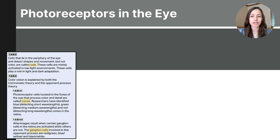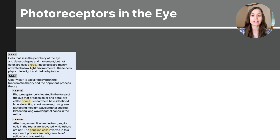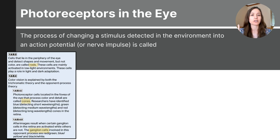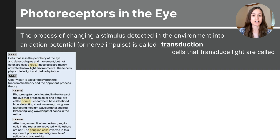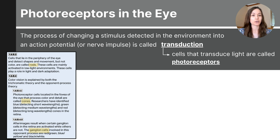As you learned in our previous video, our body has sensory receptors all throughout picking up information from the environment — in places like our skin, our nose, our ears, our tongue, and even our eyes. These sensory receptors detect stimuli like light and then transform it into an electrical message that can pass through the nervous system to the brain. This process of changing a stimulus detected in the environment into an action potential or electrical impulse is called transduction. The sensory cells in the eyes that transduce light are called photoreceptors, found in the retina — the light-sensitive tissue in the back of the eye. The retina is where light is converted into electrical signals through cells called rods and cones.